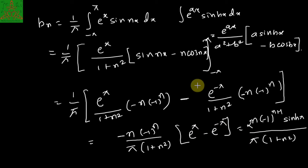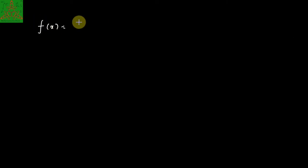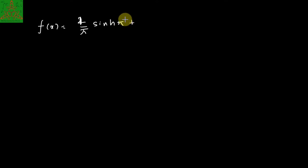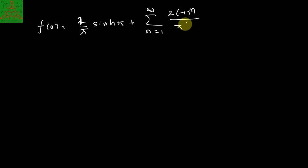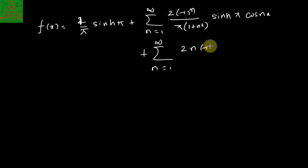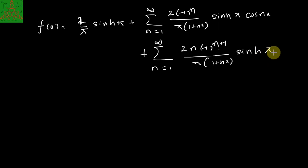Substituting the values of a₀, aₙ, and bₙ into the series, the required Fourier series is: f(x) = (1/π)·sinh(π) + summation n from 1 to infinity of [2·(−1)^n·sinh(π) / (π·(1 + n²))]·cos(nx) + summation n from 1 to infinity of [2n·(−1)^(n+1)·sinh(π) / (π·(1 + n²))]·sin(nx). That is the required answer.